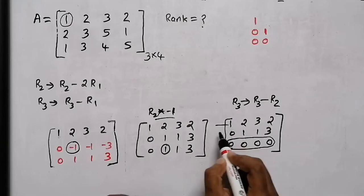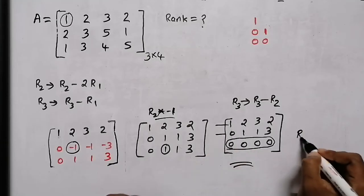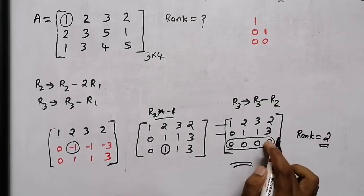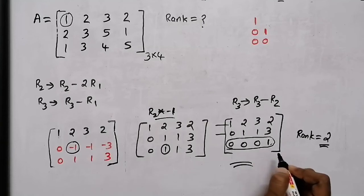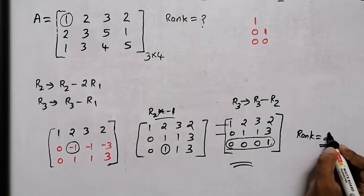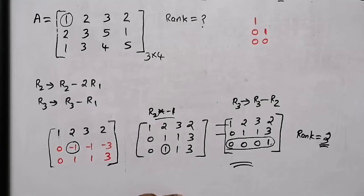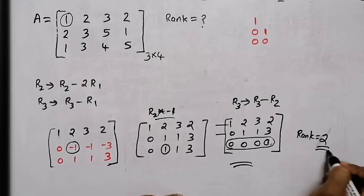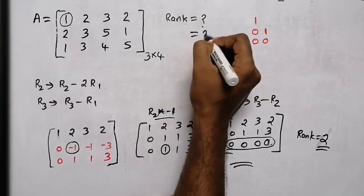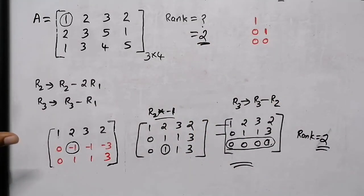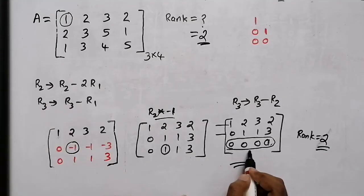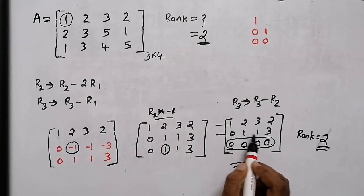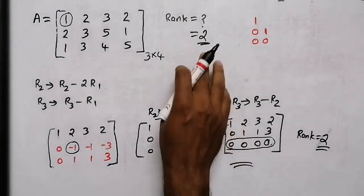The rank of this matrix is 2. Suppose if you have a number, you have a rank of this matrix. If you have a full zero row, you have a rank of this matrix. Since the non-zero rows are not 0, the rank is 2. I have two non-zero rows, so my rank is 2.